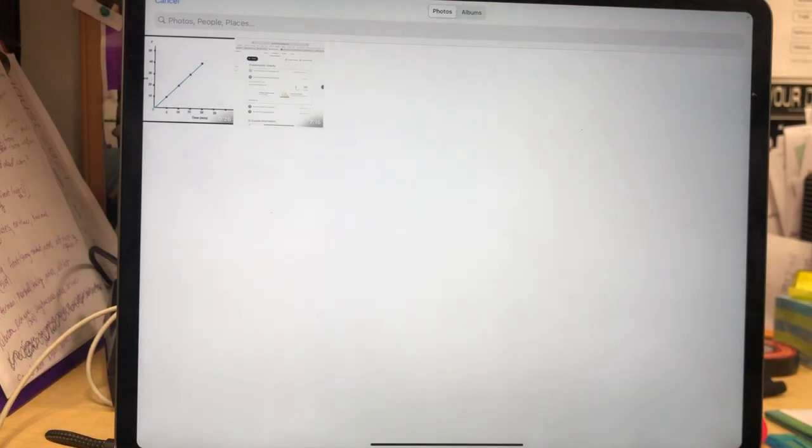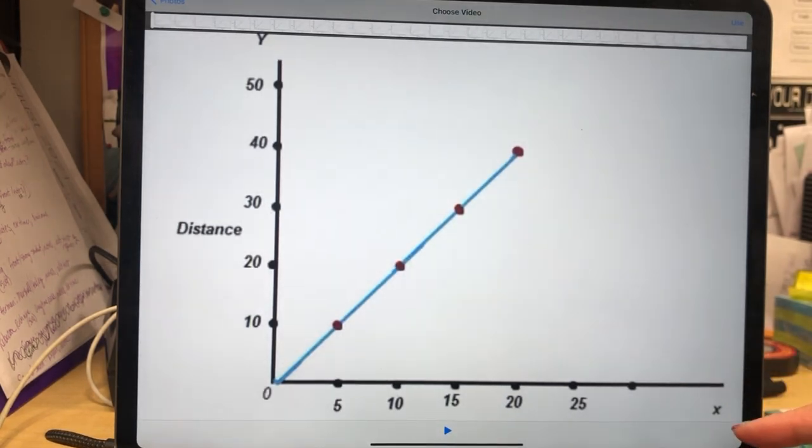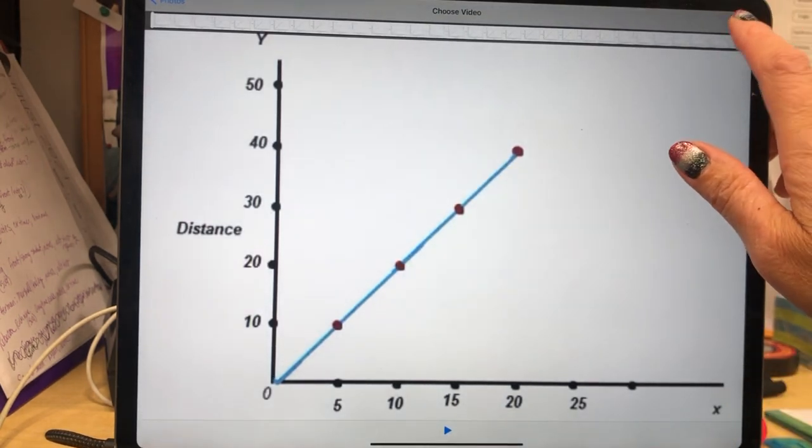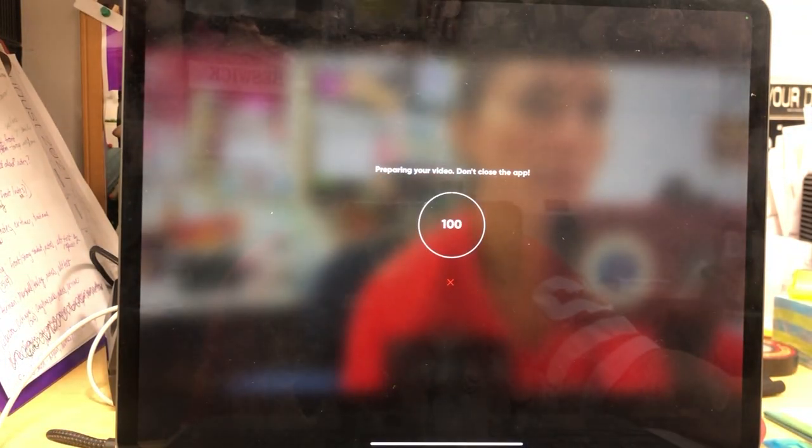So now it gives me options for anything that I have as video. So now I can click that video and here's a chance for me to play it and decide if I want to use it or not. When I click use, then it will go ahead and upload to the site.